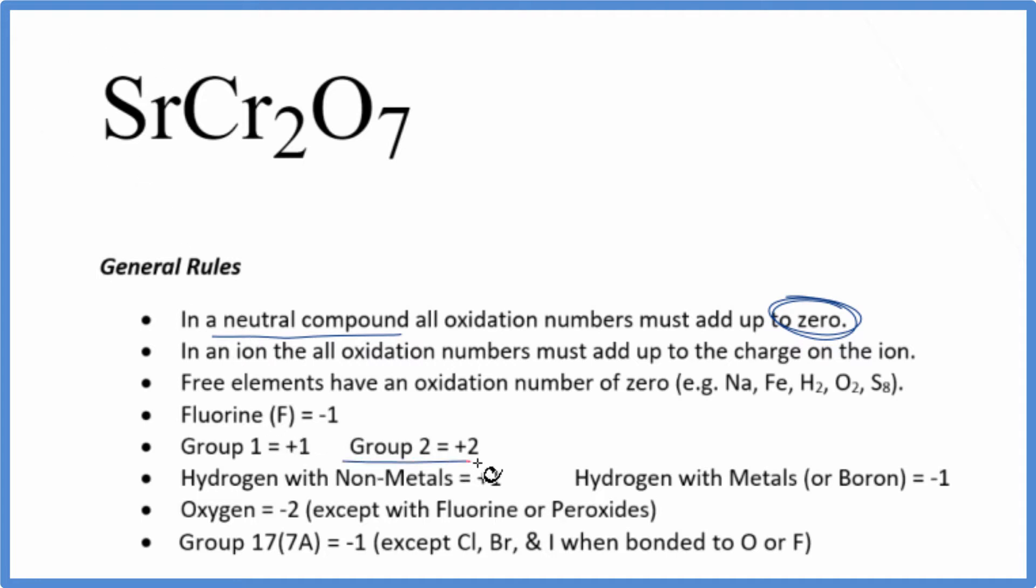Strontium, that's in group two on the periodic table, so it's gonna have a plus two oxidation number. The chromium, that's a transition metal. We don't know. We call that x. But oxygen, that's almost always minus two, with just a few exceptions.